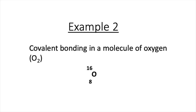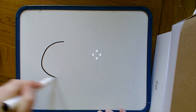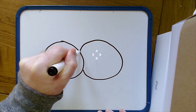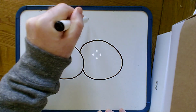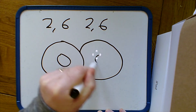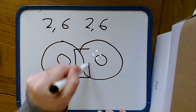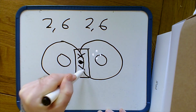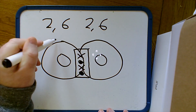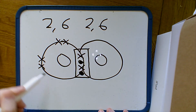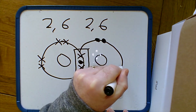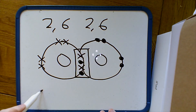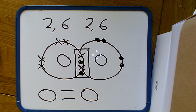In example 2 we're going to look at the covalent bonding in an oxygen molecule, O2. Oxygen is atomic number 8, mass number 16, with eight electrons and an electron arrangement of 2,6. Each oxygen atom needs two electrons to gain a full outer shell. In the box containing the shared electrons I put four electrons — two for each oxygen atom. The remaining four electrons go around the outside of each oxygen, so each oxygen has a share of eight electrons. With two pairs of electrons in the box, there is a double covalent bond.